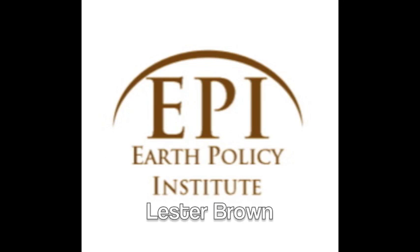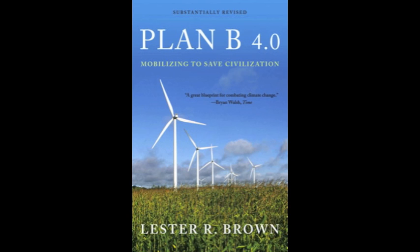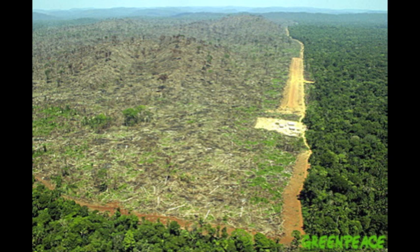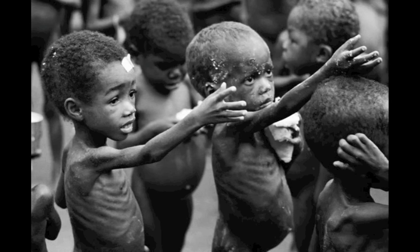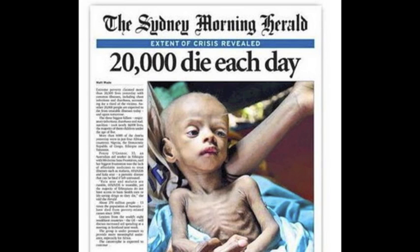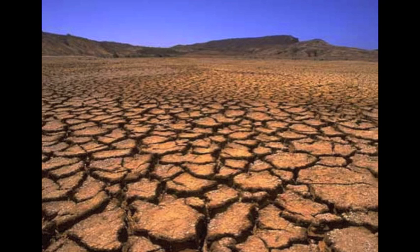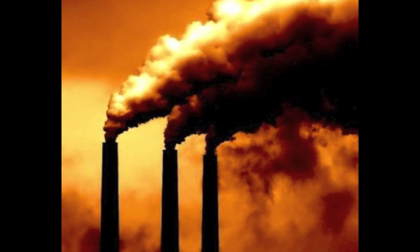Lester Brown is the president of the Earth Policy Institute in Washington. In his book, Plan B, he spends the first half citing fact after fact about deforestation, soil erosion, population issues like starvation and malnutrition and disease, as well as lack of fresh water, dirty forms of energy like coal and oil, pollution, climate change, and the list goes on.